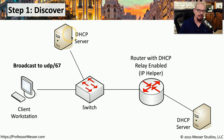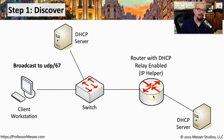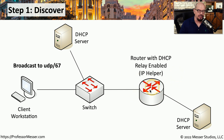One thing you may remember is that routers will not allow broadcasts to pass. However, in our example the broadcast did pass through the router to a DHCP server on the other subnet. That's because we've configured this router as a DHCP proxy, sometimes referred to as a DHCP relay, and some manufacturers call it an IP helper. This requires pre-configuring the router so that any broadcasts associated with DHCP are automatically forwarded to a DHCP server elsewhere on the network.